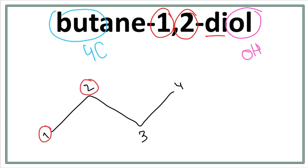So let's get rid of these numbers and let's attach the OHs. So this is the structure for butane-1,2-diol.